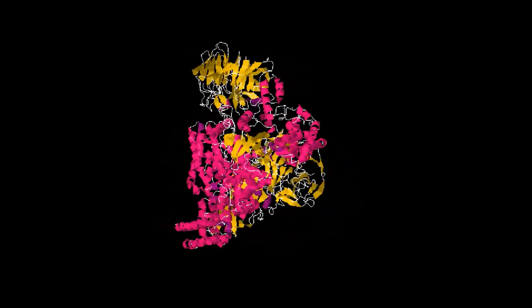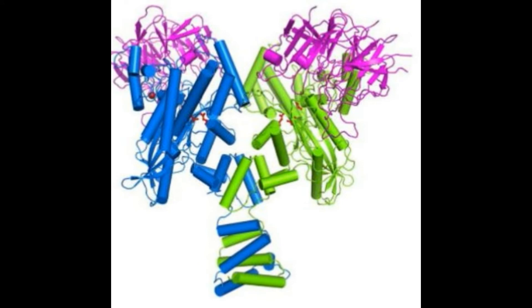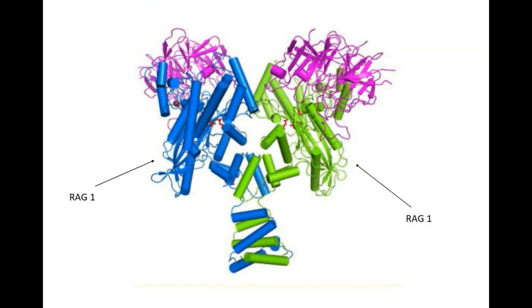RAG1 and RAG2 form RAG recombinases. This is a heterotetramer that is Y-shaped with the amino terminal domains of the two RAG1 chains forming an intertwined stock. The two RAG1 chains are shown here in blue and green ribbon, and the RAG2 subunits are shown in magenta.